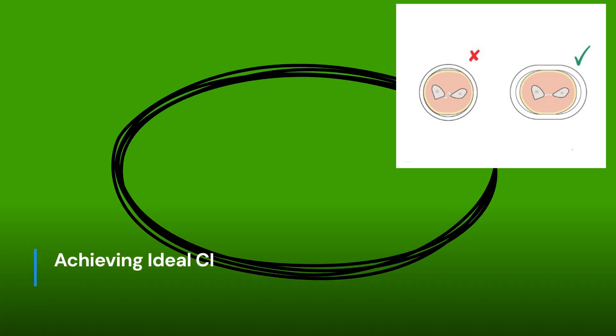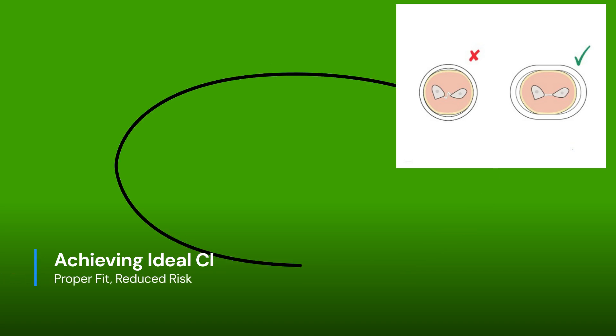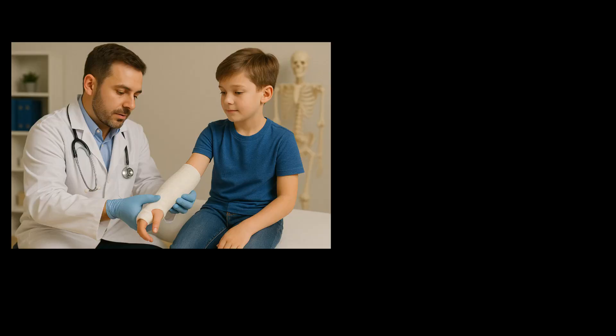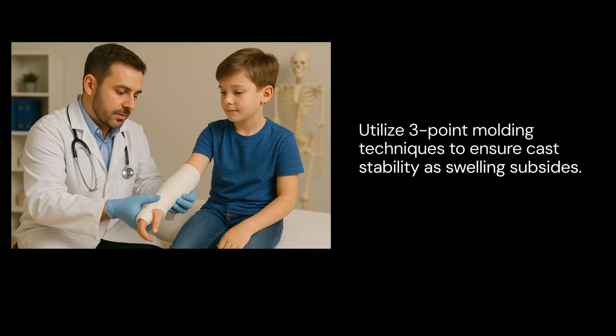To achieve the ideal CI, ensure the cast is oval-shaped, not circular. This shape maintains a proper fit, reducing the risk of re-displacement. Utilize three-point moulding techniques and avoid excessive padding. As swelling subsides, a well-moulded cast prevents looseness and maintains fracture stability.